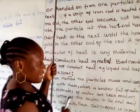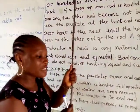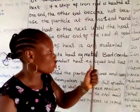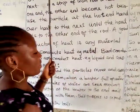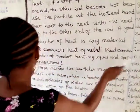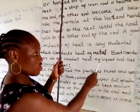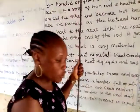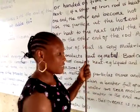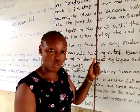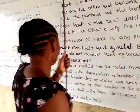For example, metal is an example of a good conductor of heat. Bad conductors do not conduct heat — for example, liquid such as water and gas. They are not good conductors of heat.